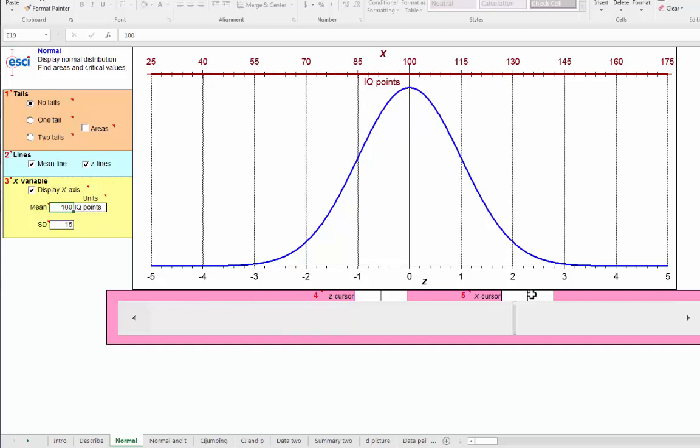So what proportion of people would you expect to score an IQ score above 130? Translate that down here to Z of 2, and we know the area here is roughly 2.5%, so roughly 2.5% of people would score an IQ greater than 130.